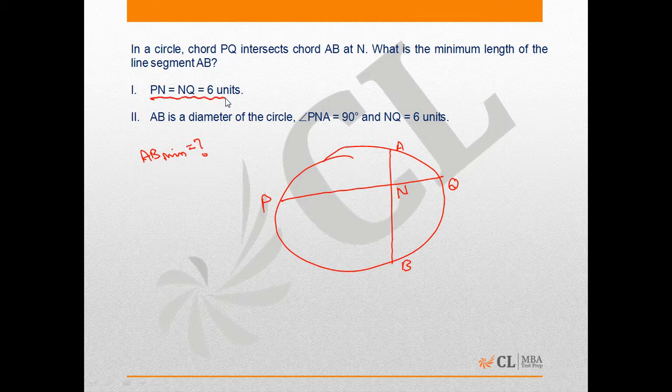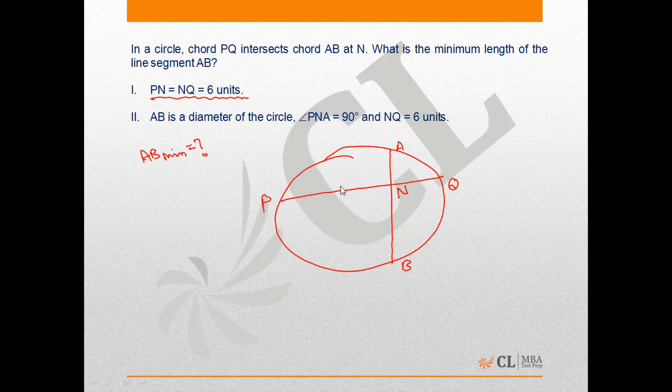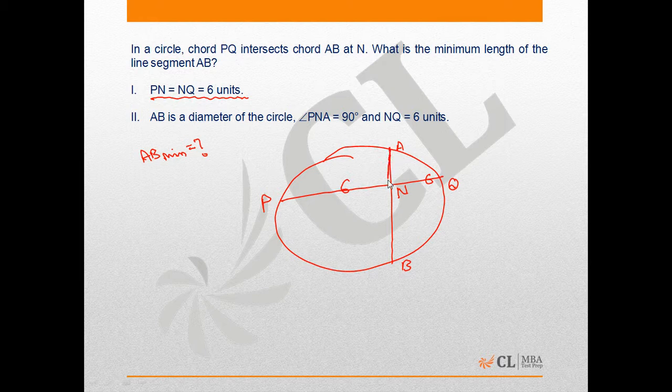Statement one says PN into NQ - PN and NQ both are 6. So if this is 6, this is 6. I want the length of AB minimum. There can be two visibilities I can have. One is a secant theorem. If I am assuming this length is A and this length is B, can I say A into B is 6 into 6, which is 36.